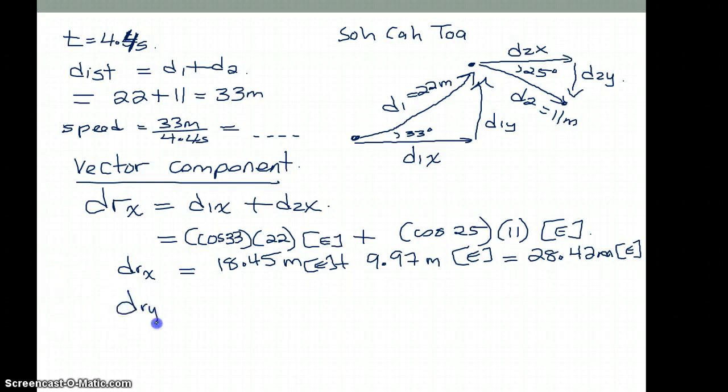Now for the d resultant y, we'll do exactly the same thing, which is d1y plus d2y. Of course, if this is cos, d1y has to be the sine because it's opposite of my angle. So that's going to be sine of 33 times 22, which is going in the northerly direction, plus sine of 25 times 11. However, this is going in the southerly direction.